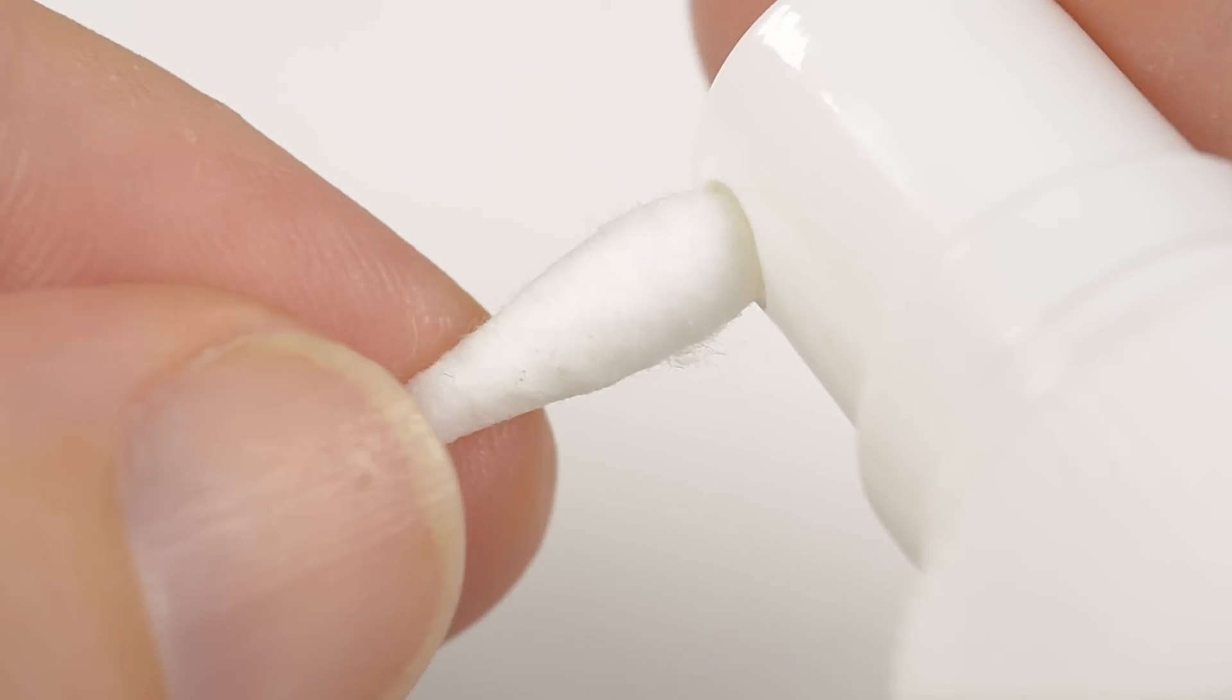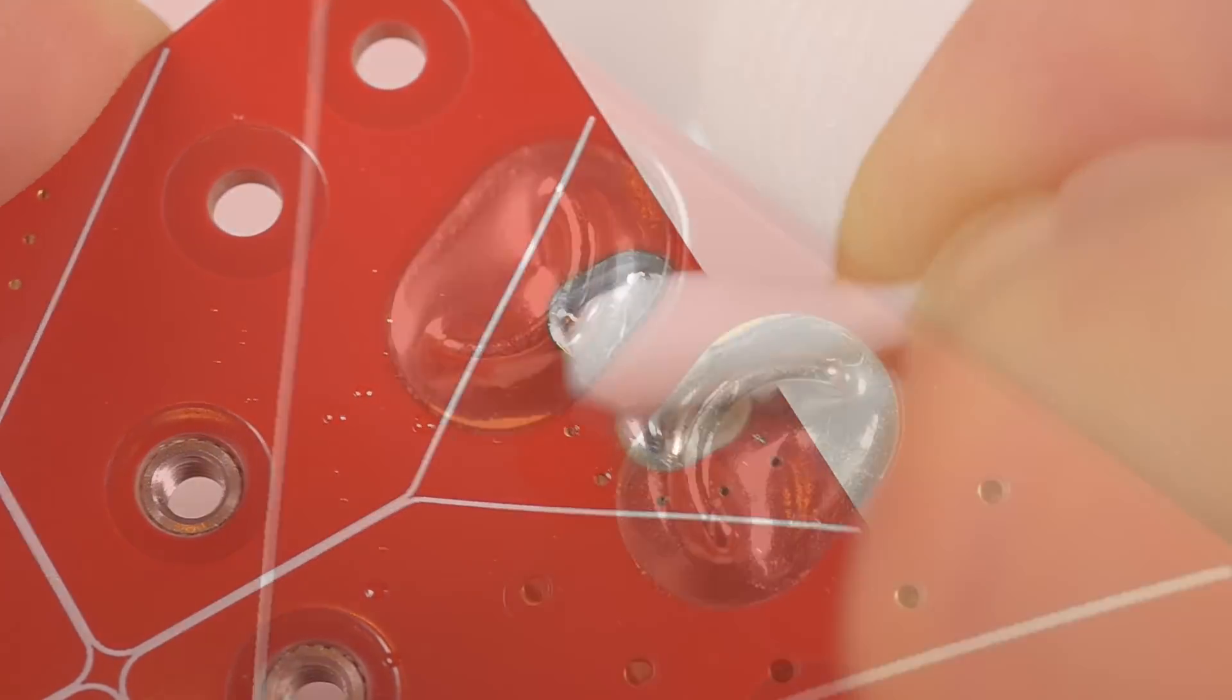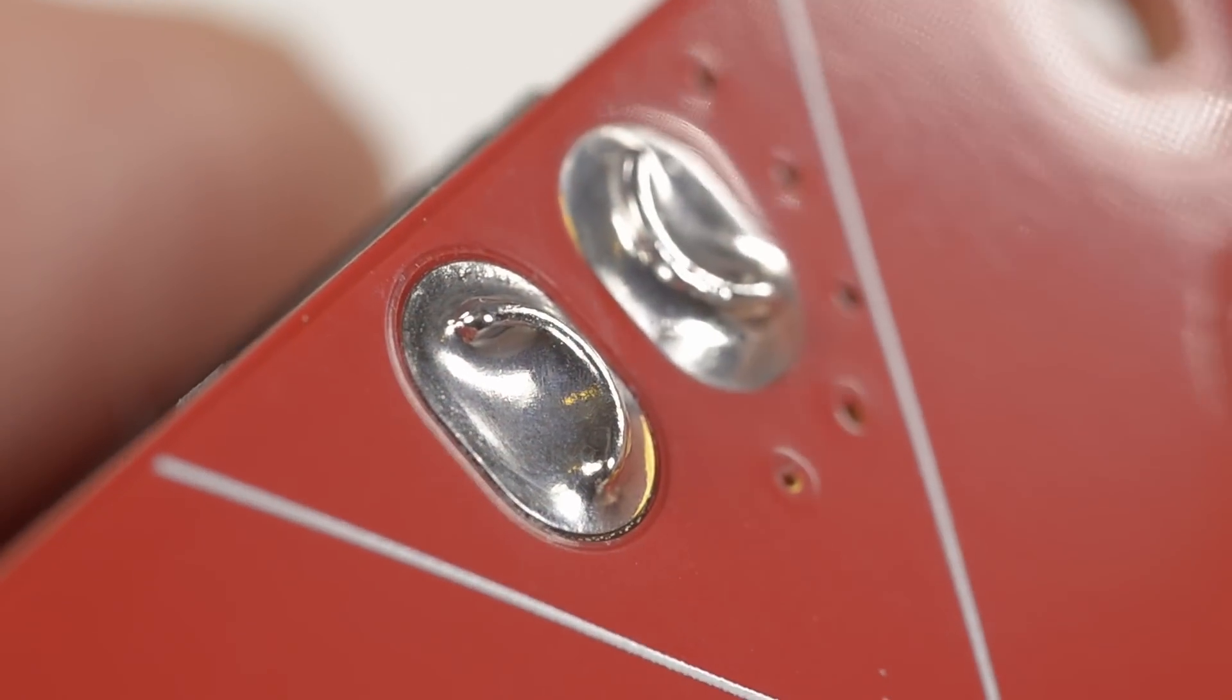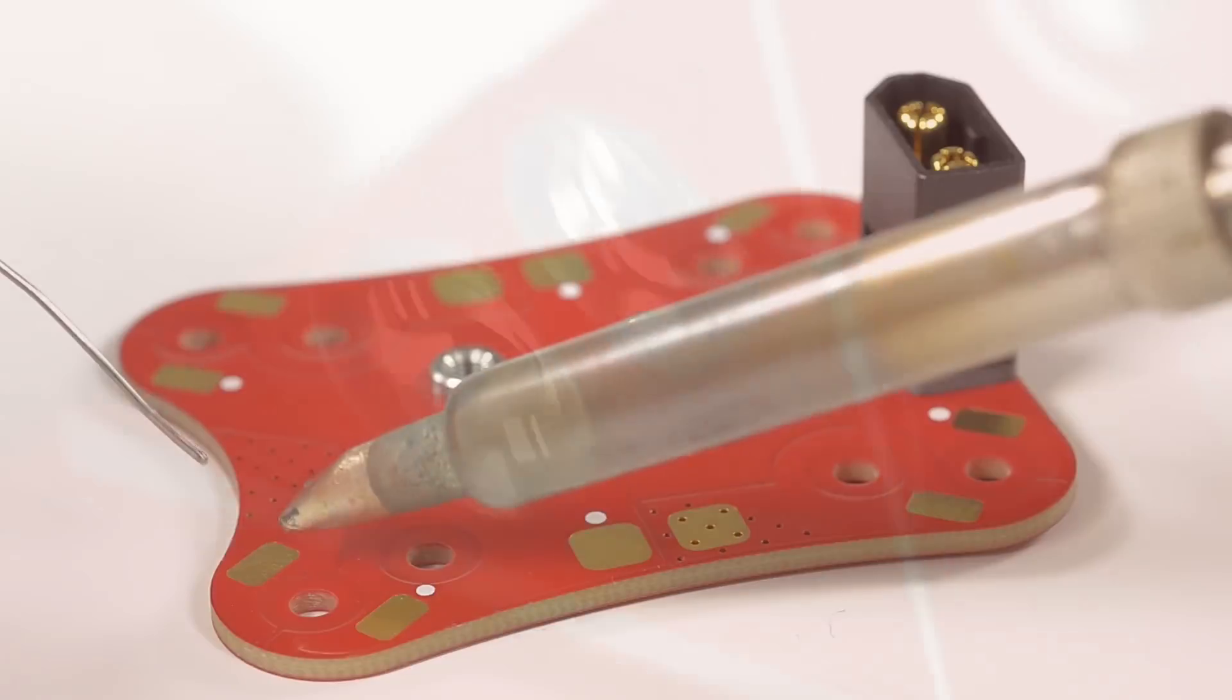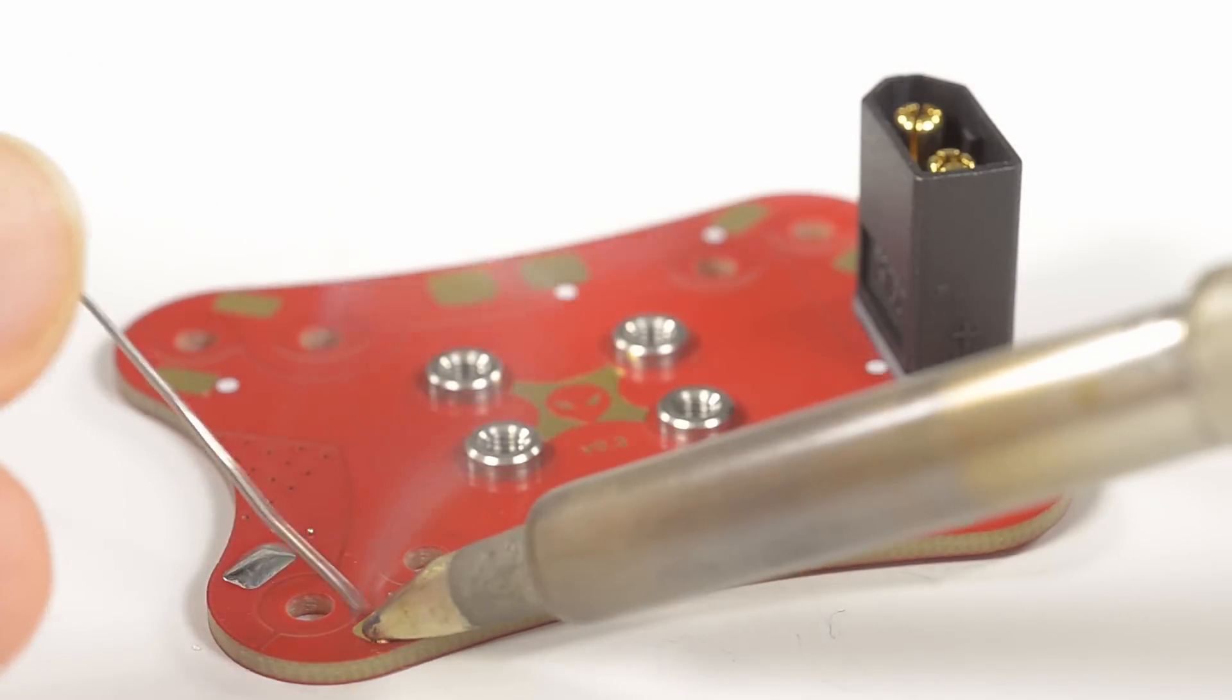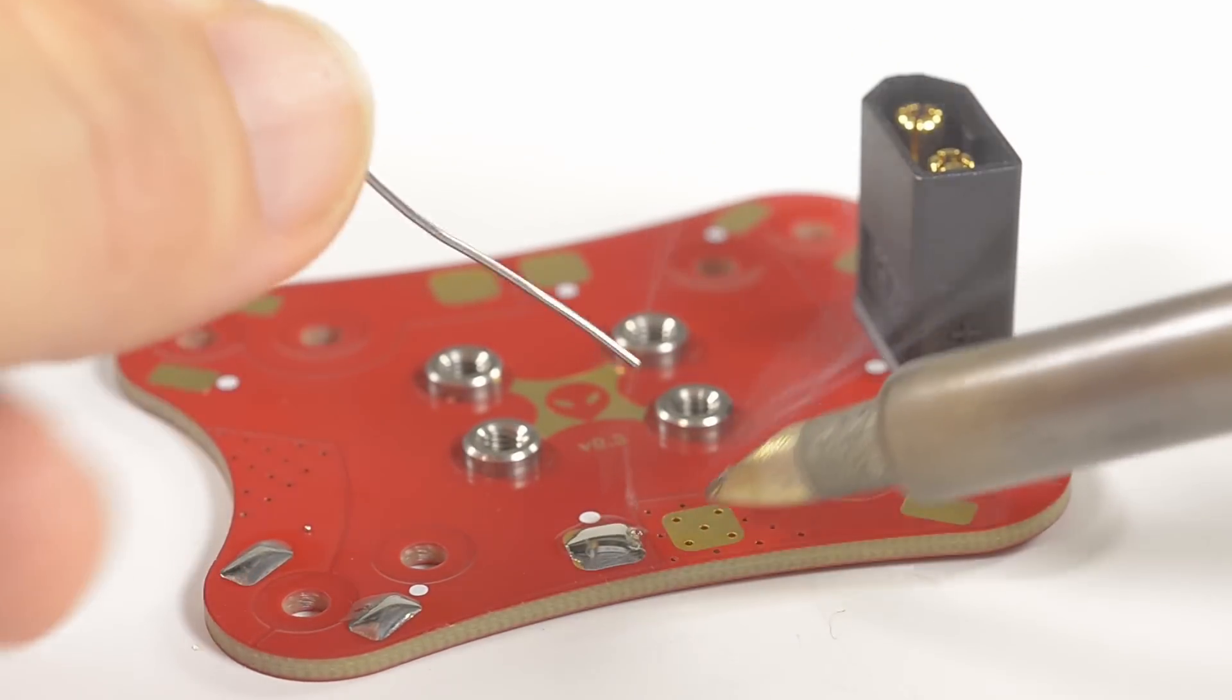Clean up with isopropyl alcohol and remove the flux from the finished joint. Now tin the ESC pads and any center pads you plan to use.